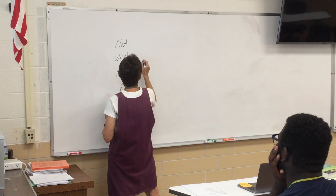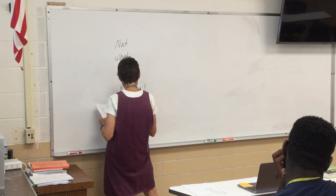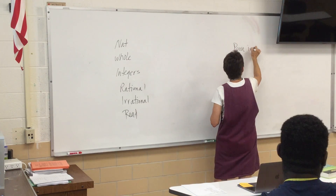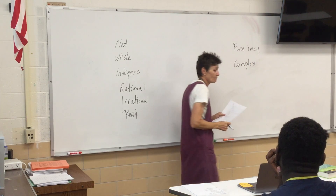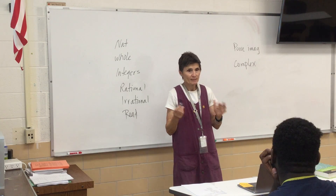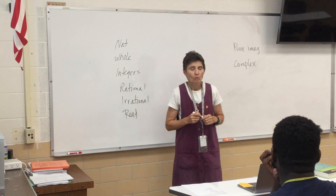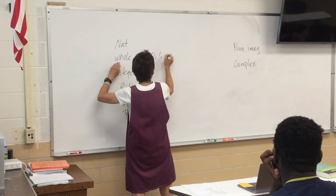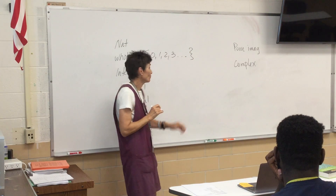Whole numbers — that's not bad, but it's not complete. Because, for example, negative eight is not a fraction. Well, it could be negative eight over one, but negative eight is not a whole number. So the set of whole numbers is the set: zero, one, two, three. There's really no way to define whole numbers other than in a roster.